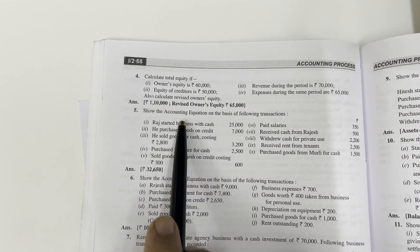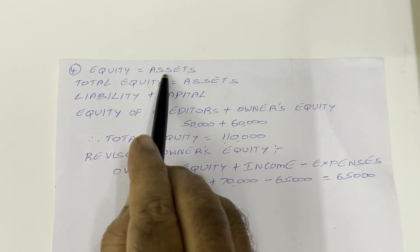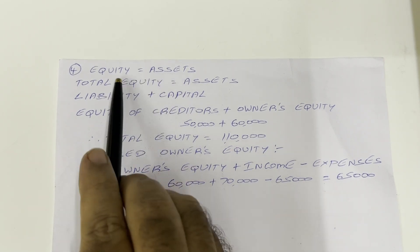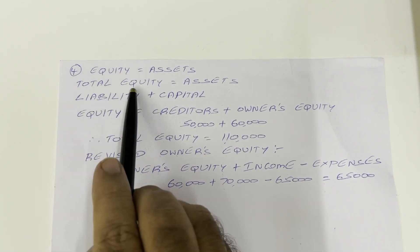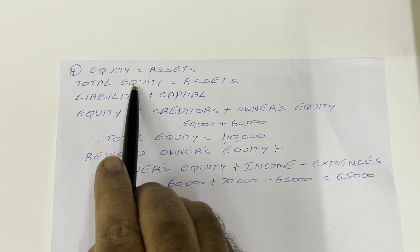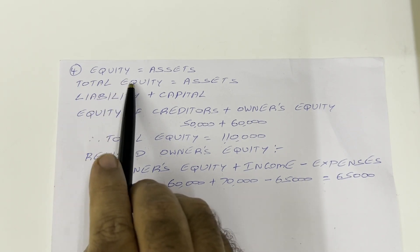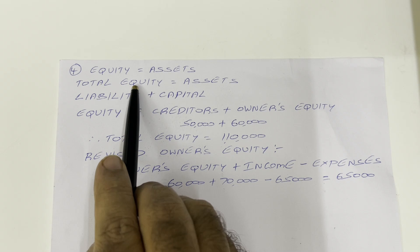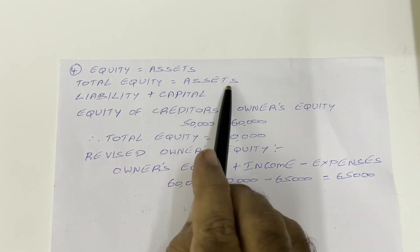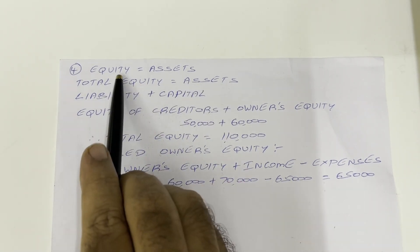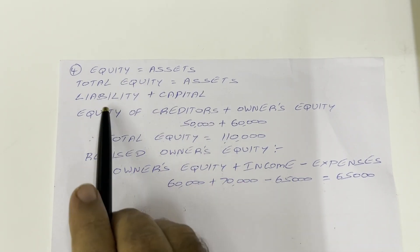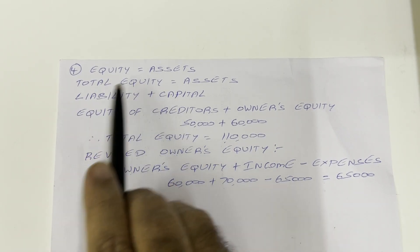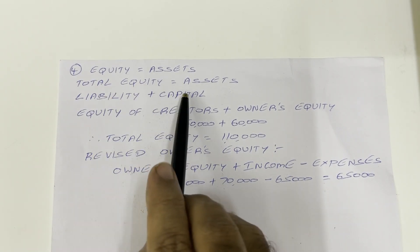Let us see the solution for this. We know the accounting equation now. Equity is equal to assets. Here equity means total equity, because in the question he is using the total equity word. So total equity is equal to assets. The equity formula is: liability plus capital. So total equity is equal to liability plus capital.